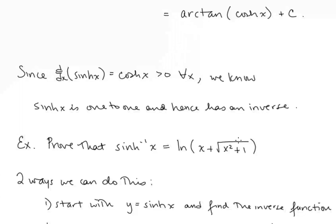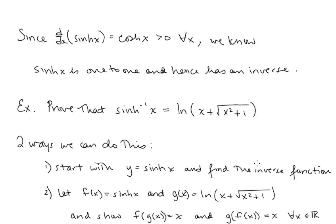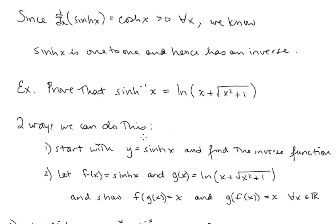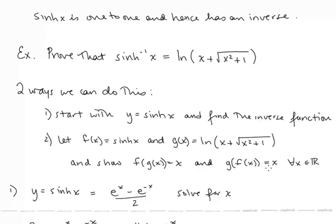Since d/dx[sinh(x)] = cosh(x) and cosh(x) is always positive, sinh(x) is one-to-one and has an inverse. We want to prove that sinh⁻¹(x) = ln(x + √(x² + 1)). There are two approaches: solve directly for the inverse by finding x in terms of y, or compose the two functions in both orders and show each composition equals x for all real x.